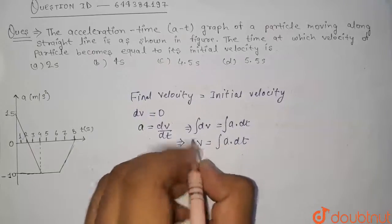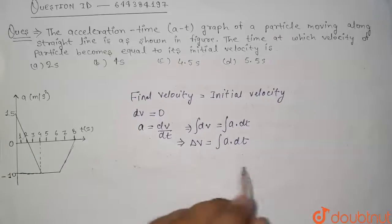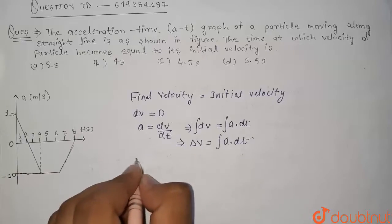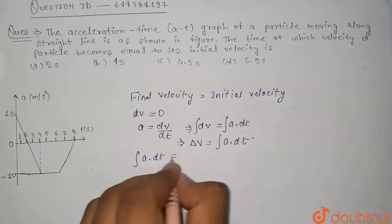Now for this dv is equal to 0, we have to take the graph that much so that the integral of a dot dt will be equal to 0. Integral of a dot dt should be equal to 0.